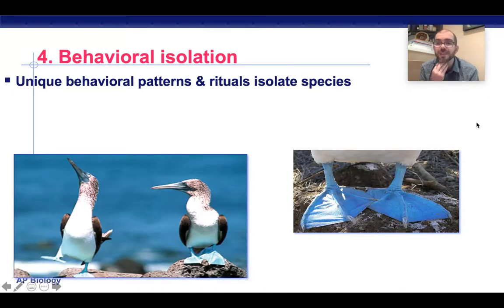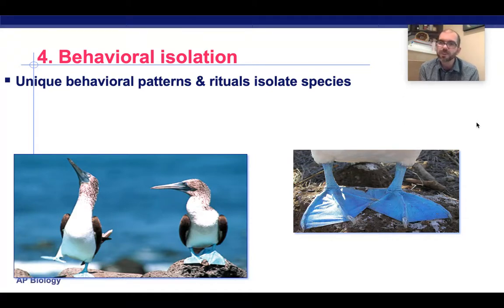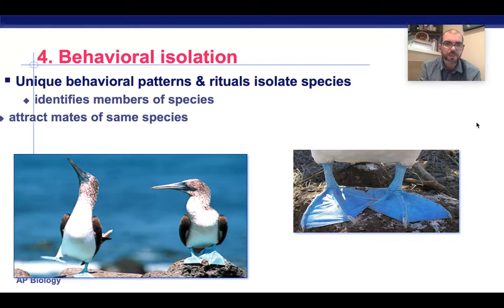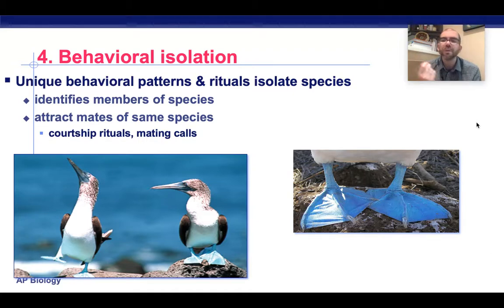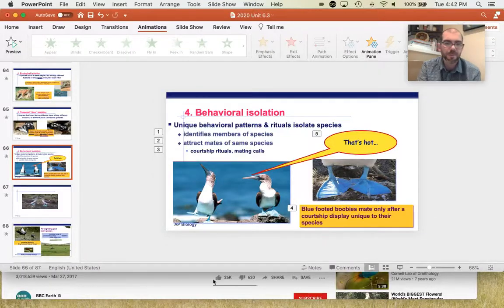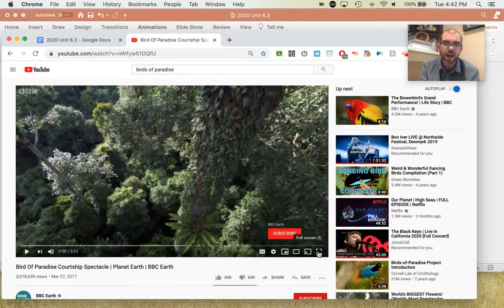Behavioral isolation is the type of isolation that humans experience. This is when unique courtship rituals or behavioral patterns determine whether organisms reproduce. For example, the blue-footed boobies found in the Galapagos have a dance where they move their feet. If another bird finds it attractive, they'll mate; if they're not into the dance, they won't. There are many, many different examples of this. To show how widespread these examples are, let's look at birds known as the birds of paradise.